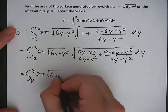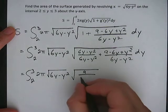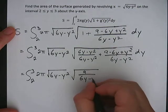So we have our square root here, and then in the square root, like I said, the numerator is going to be 9, and the denominator is going to be 6y minus y squared.